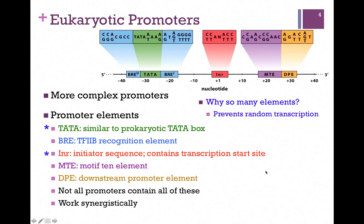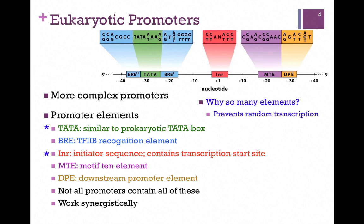The other thing you want to recognize is that there are so many elements because it prevents random transcription from different promoters — and we'll talk about that more in just a moment. Not all promoters contain all of these elements, and they work synergistically. In other words, we can mix and match different promoter elements as a way of controlling transcription. You'll also want to recognize that, in this case, there are actually promoter elements downstream of the start site, and that's distinct from the prokaryotic system.